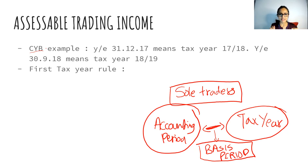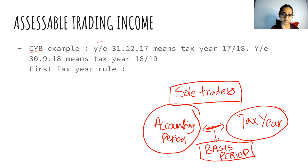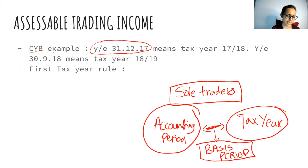CYB means we take a look at the accounting period and see which tax year the last date falls in — that tax year. For example, year-end 31/12/17 falls in tax year 2017-18, and year-end 31/3/18 falls in tax year 2018-19. Whichever tax year that last date falls in, you show the profit in that entire tax year.